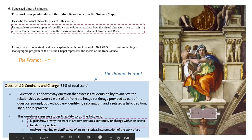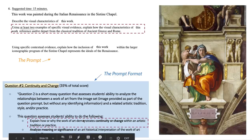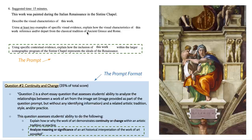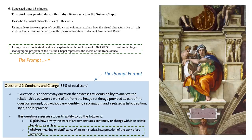One of the first tasks students are explicitly asked to do is to explain how or why the work of art demonstrates continuity or change within an artistic tradition or practice. This phrase 'reference and/or depart from the classical tradition' is basically referencing that concept. We also have this notion of analyzing the meaning or significance of an art historical interpretation of the work of art provided. This is typically asking for contextual evidence, so you need to know something about one or more of the periods mentioned in order to make sense of this work.